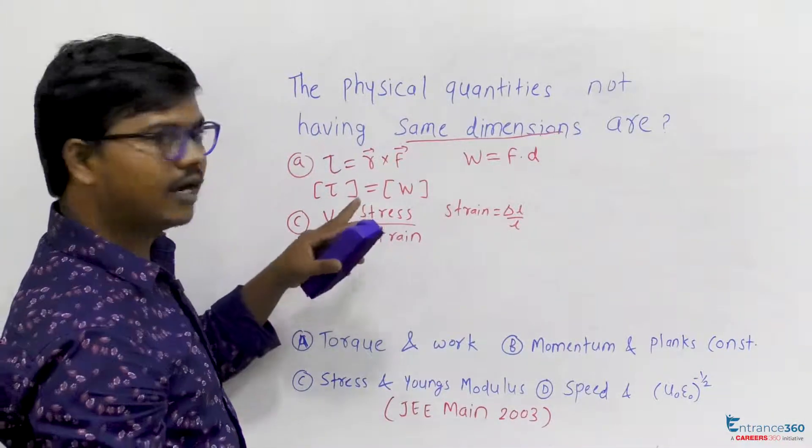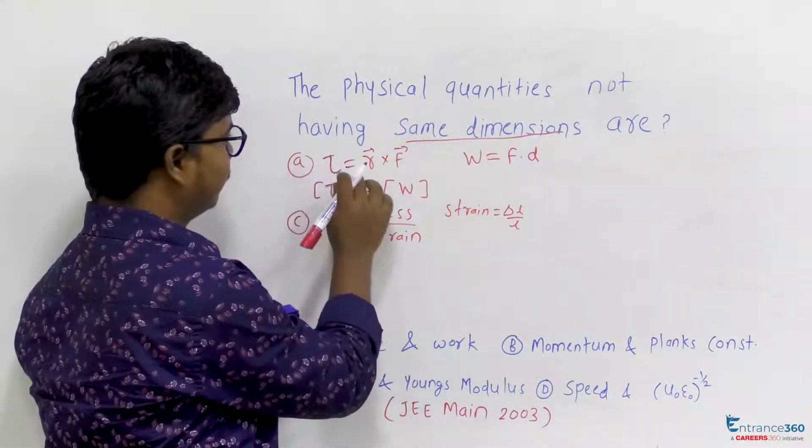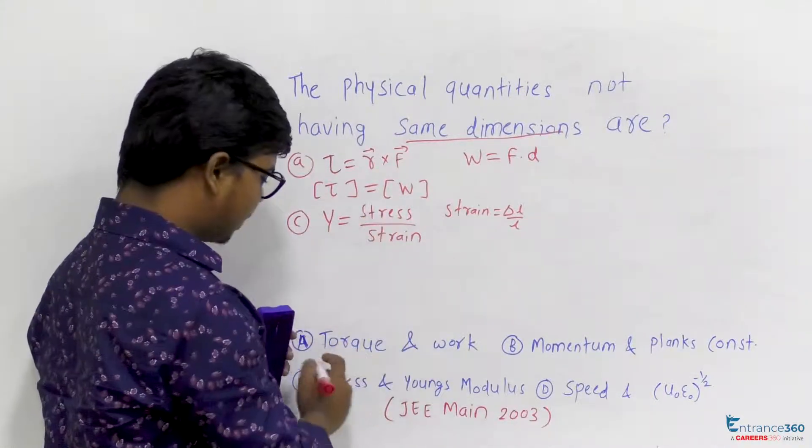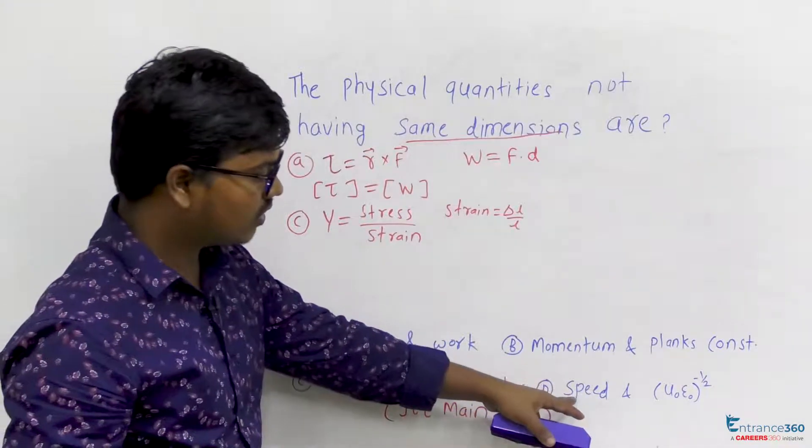So dimension of Young's modulus will be equal to dimension of stress. So these two quantities will have same dimension, and the first two quantities will also have same dimension. Now we are remaining with these two options.